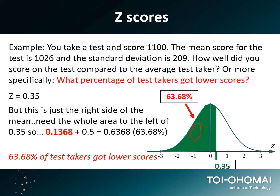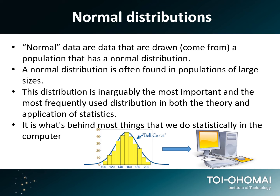Here we see the same thing, but with the 50 percent of scores below the mean represented in green as well. Essentially, we're using the area under the curve — knowing the data is normally distributed — to make a prediction for any score within the whole range of test takers. If we know how many standard deviations away from the mean a score is, we can make probability statements. For example, a score two standard deviations above the mean gives a 97.5 percent probability.